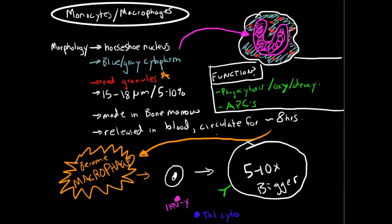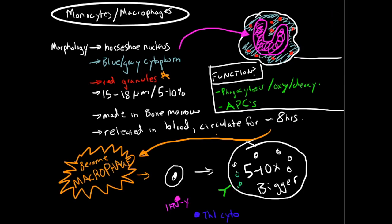The cell will increase by 5 to 10 times in size, which is huge. The complexity of all the different organelles on the inside increases dramatically, and there are also increased numbers of organelles to account for this 5 to 10 times increase in size.